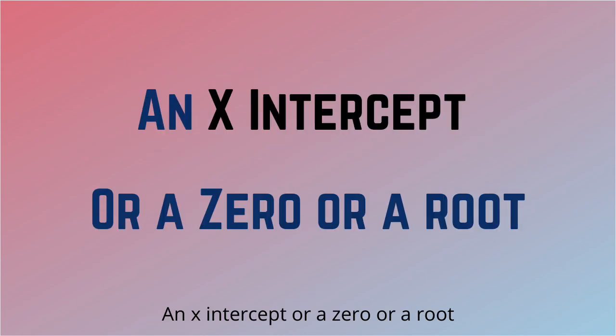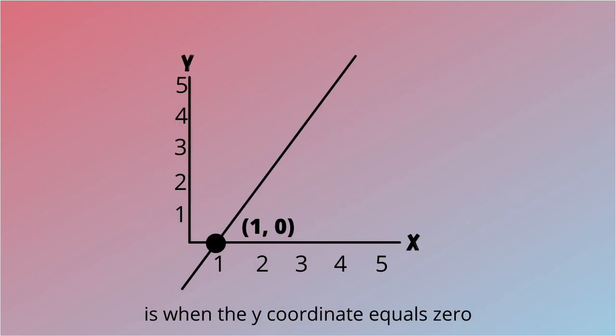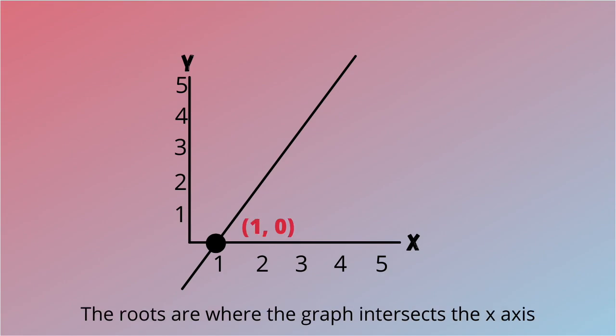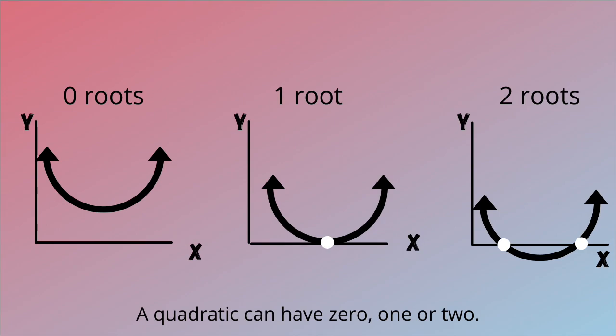An x-intercept or a zero or a root is when the y-coordinate equals zero. The roots are where the graph intersects the x-axis. A quadratic can have zero, one, or two.